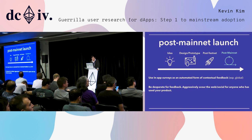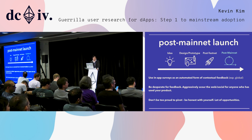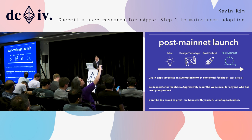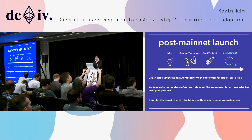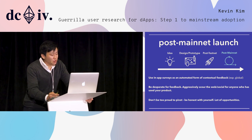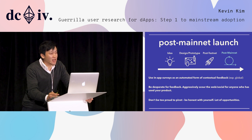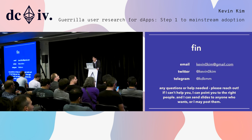Be desperate for feedback. Aggressively scour web and social for anyone who has used your product. And don't be too proud to pivot. If you realize your idea isn't something people want, you've already learned a lot about how dApps and blockchain work. Be honest with yourself — don't do the 'everything else is great but the throughput, so I'll just wait two years for sharding' thing, or 'it's just MetaMask that's a problem, I'll wait a few months for delegated transactions.' You should be solving a problem that, in spite of everything happening right now, some people really, really want to use. If it doesn't meet that bar, just stop.